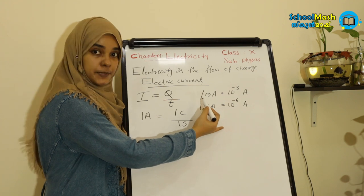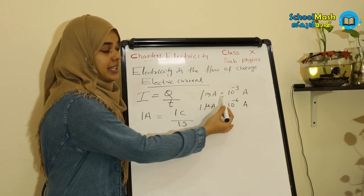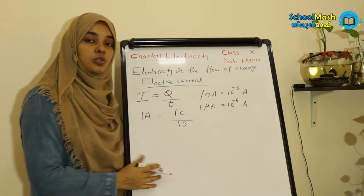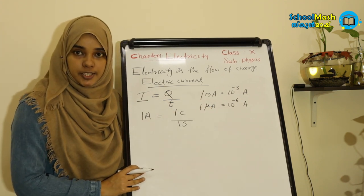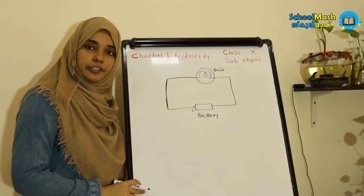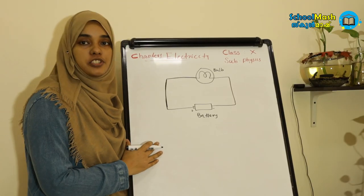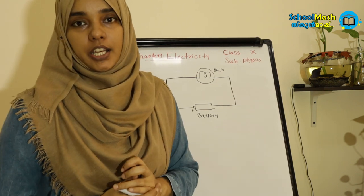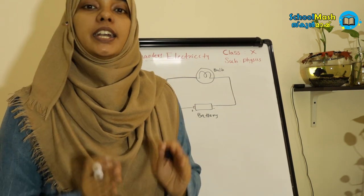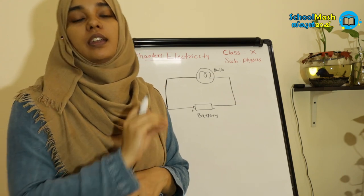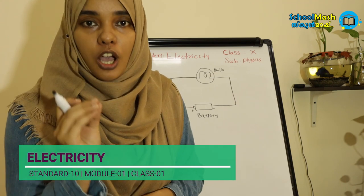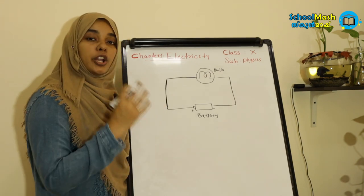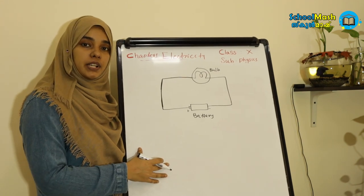Now, for current to flow, we need a closed continuous path available. If there is a closed path, the current flow will be complete. If we have an open space, the current will break off. The closed path for current flow is called a circuit.